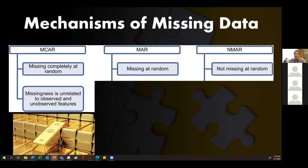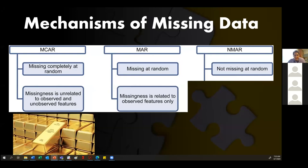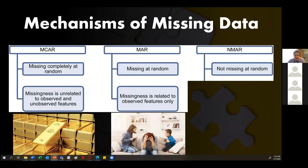We can always try to think of a reason why data is missing, and if you can think of a reason it's probably missing at random — because you can relate it to something in the study. Missing completely at random is unrelated to observed or unobserved features. Missing at random: the missingness is related to observed features but not to unobserved features.